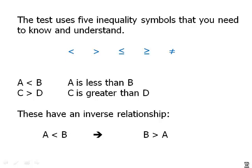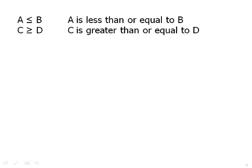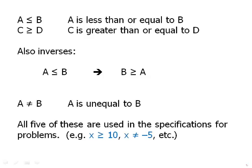Next, the less than or equal to and greater than or equal to symbols: A is less than or equal to B, C is greater than or equal to D. These leave open the possibility that the two are equal or that one is bigger. Again these are inverses: if A is less than or equal to B, then B is greater than or equal to A. Finally, A is not equal to B — either one could be greater or less; all we know is they don't have the same value. All five symbols can appear in the specifications for problems, such as 'if X is greater than or equal to 10' or 'X is not equal to 5.'